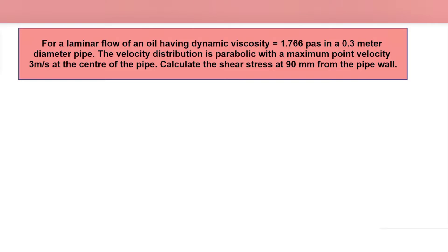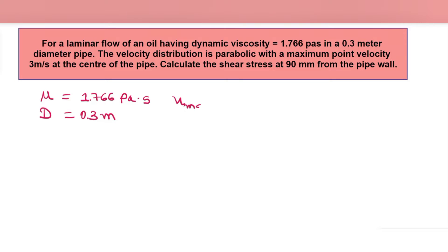The first question: for a laminar flow of an oil having dynamic viscosity mu = 1.766 Newton second per meter square, in a 0.3 meter diameter pipe, the velocity distribution is parabolic with a maximum point velocity of u_max = 3 meter per second at the center of the pipe. Calculate the shear stress at 90 mm from the pipe wall.